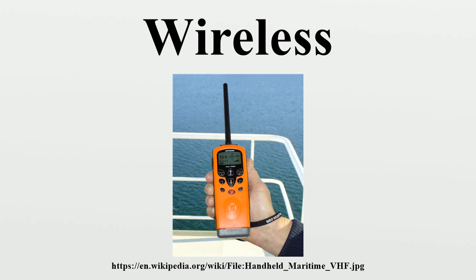Common examples of wireless equipment include infrared and ultrasonic remote control devices; professional LMR and SMR, typically used by business, industrial, and public safety entities; consumer two-way radio including FRS family radio service, GMRS, and citizens band radios; the amateur radio service; consumer and professional marine VHF radios; airband and radio navigation equipment used by aviators and air traffic control; cellular telephones and pagers providing connectivity for portable and mobile applications; and global positioning systems allowing drivers, captains, and pilots to ascertain their location anywhere on Earth.